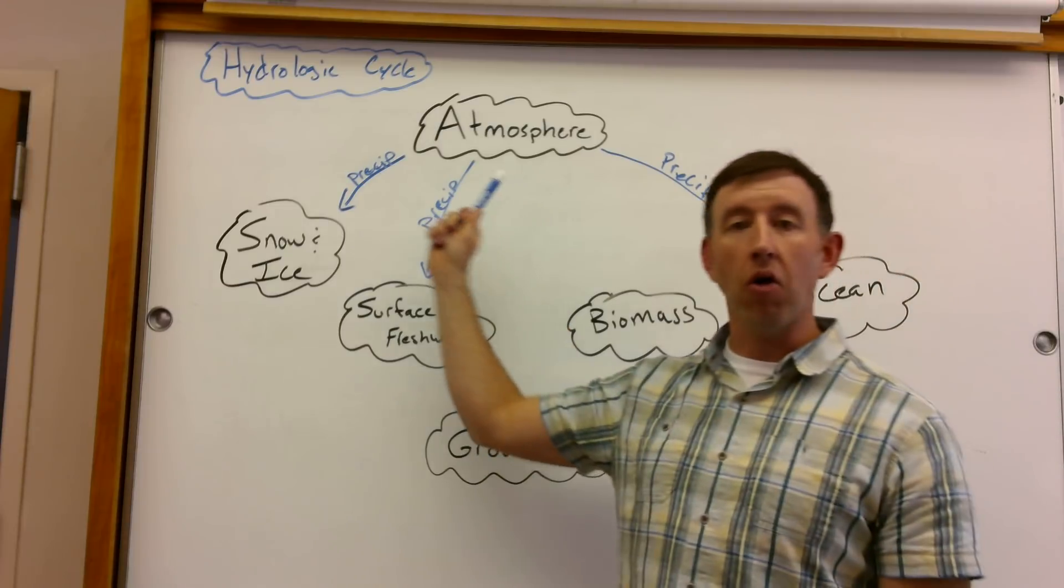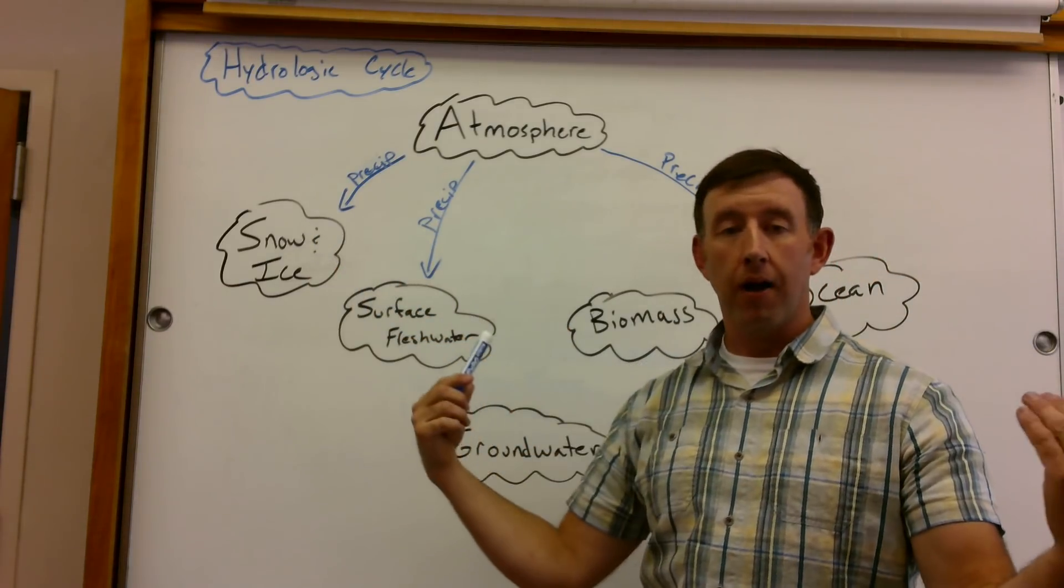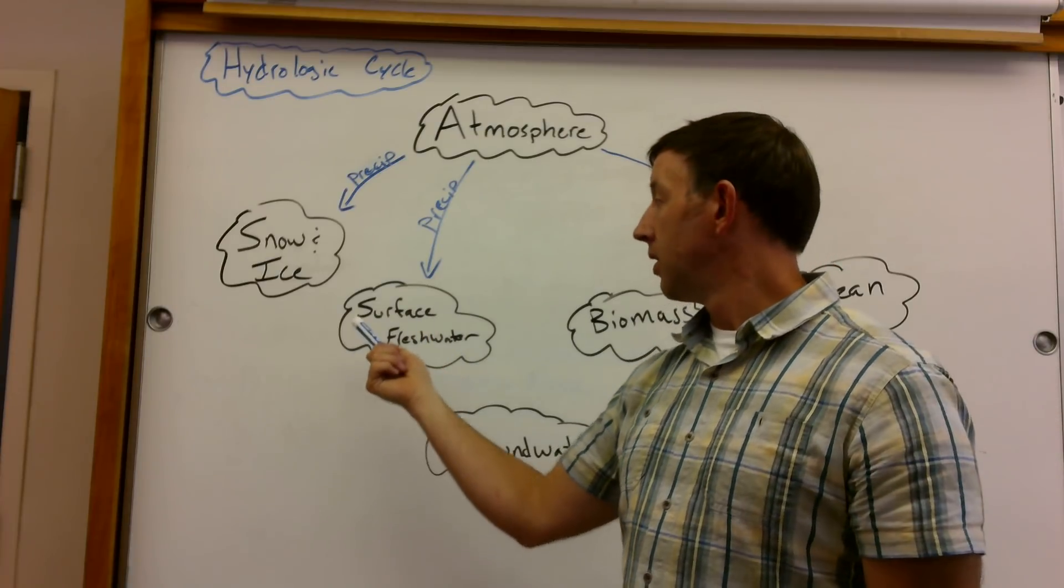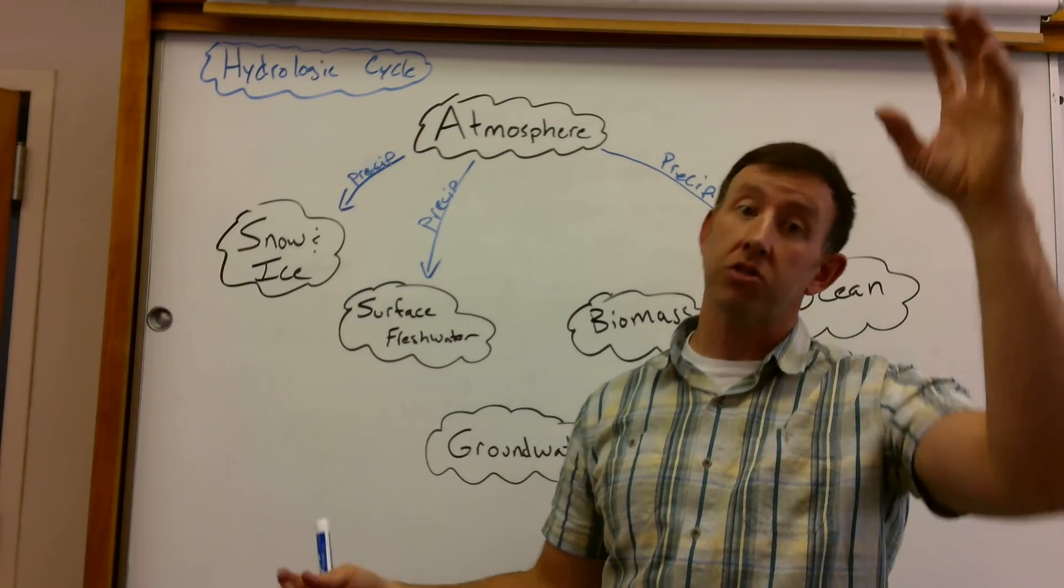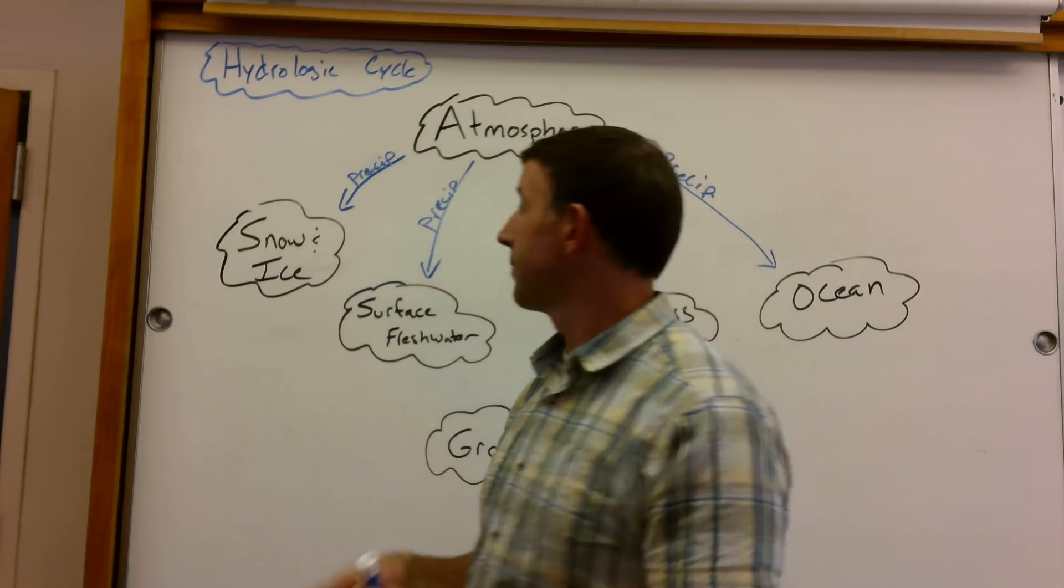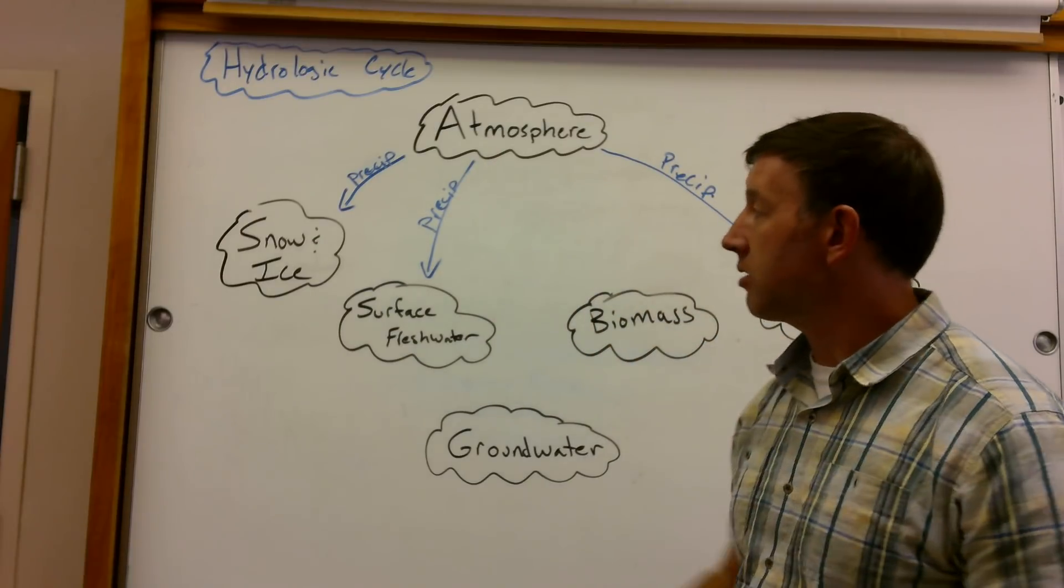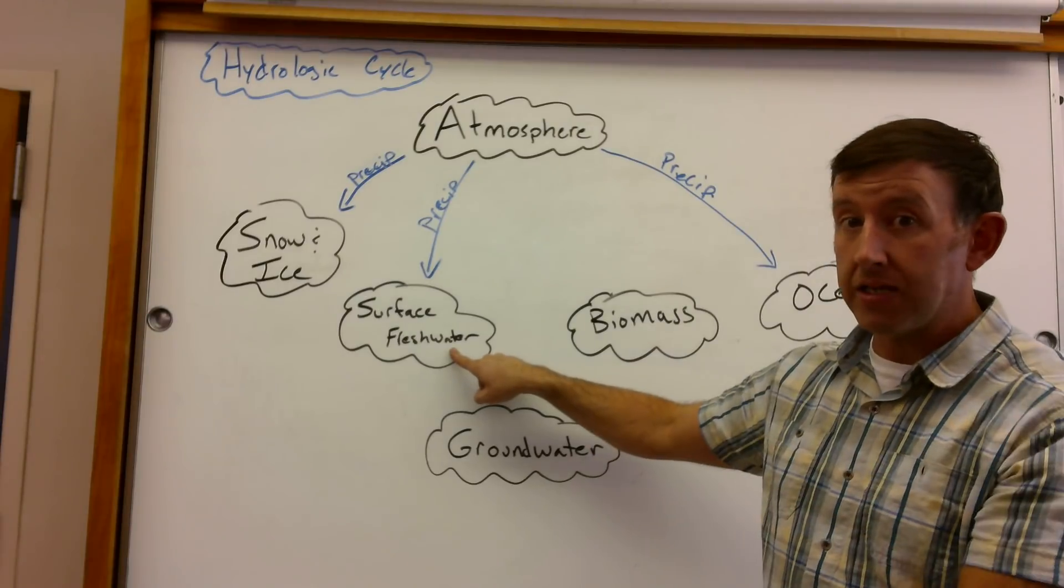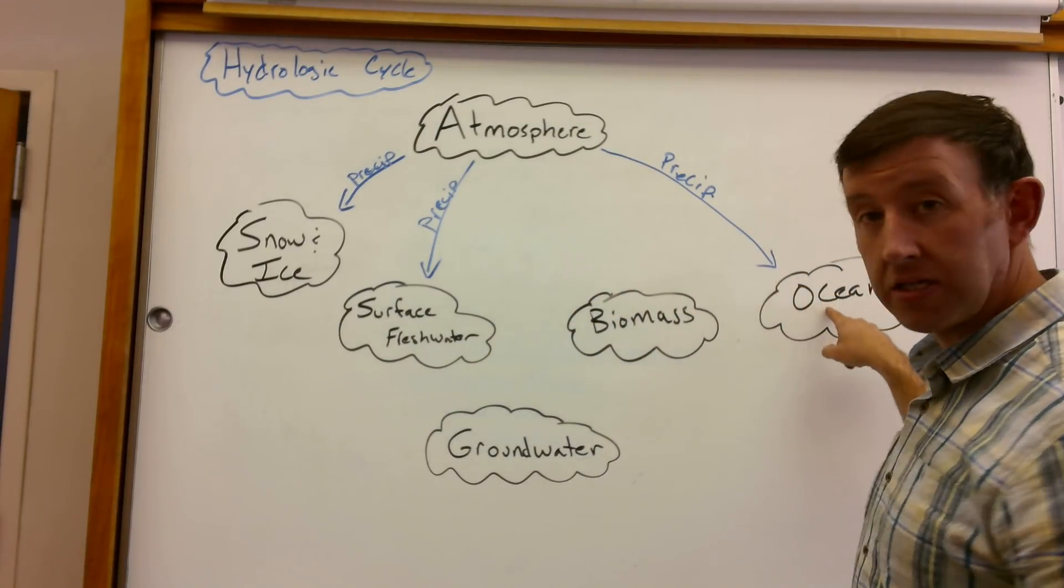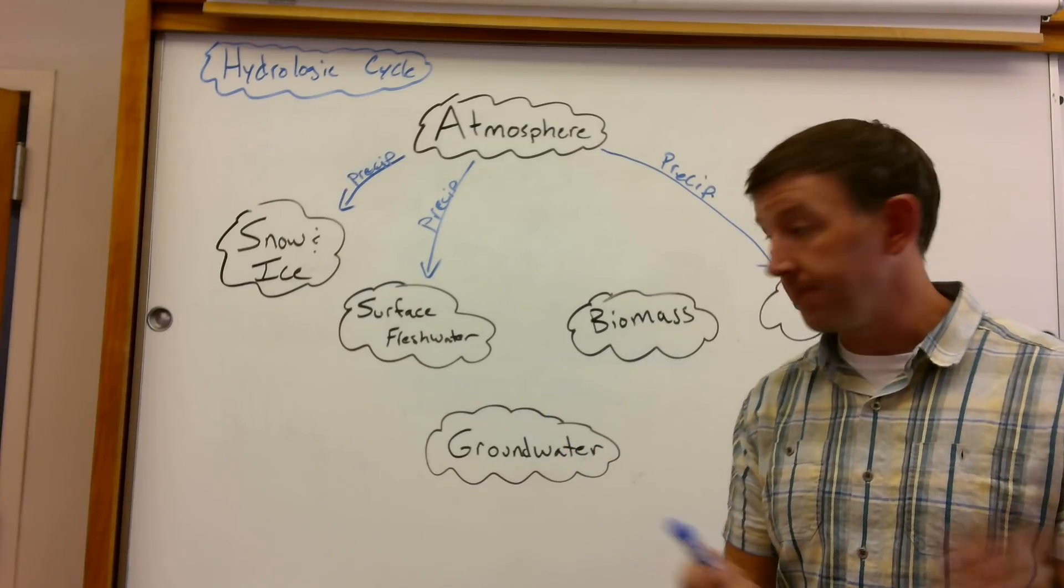If it falls in this solid form, of course, that contributes to snow and ice, which will eventually, in some cases, become surface fresh water, unless it ends up in an arctic or Greenland, in which case some of that just stays ice for really, really long periods of time. So we got precipitation contributing to our snow and ice, our surface fresh water, that falls directly as rain. And in some cases, that just ends right back up in the ocean. It does rain over the ocean from time to time.